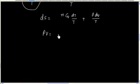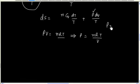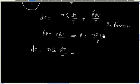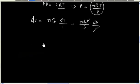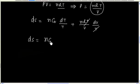We can use the ideal gas equation PV equals nRT, so we can write pressure equals nRT divided by V. Substituting, dS equals nCv dT divided by T plus (nRT/V) times dV divided by T. The T cancels, so we have dS equals nCv dT divided by T plus nR dV divided by V.